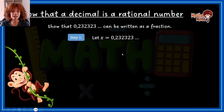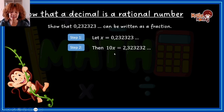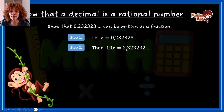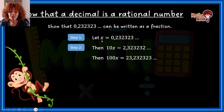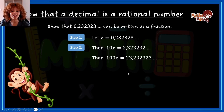Next example: show that 0.232323... can be written as a fraction. We let x equal 0.232323... Now, when multiplying, whatever comes after the decimal in both expressions must follow the same order. Multiplying by 10 gives 2 3 after the comma for 10x but 3 2 for x — they don't match. So we need to multiply by 100, which gives 2 3 after the comma in both x and 100x.